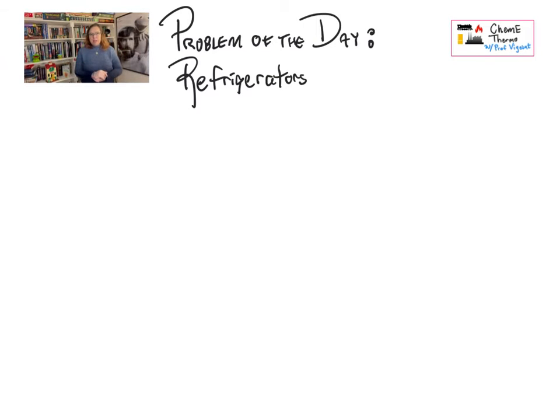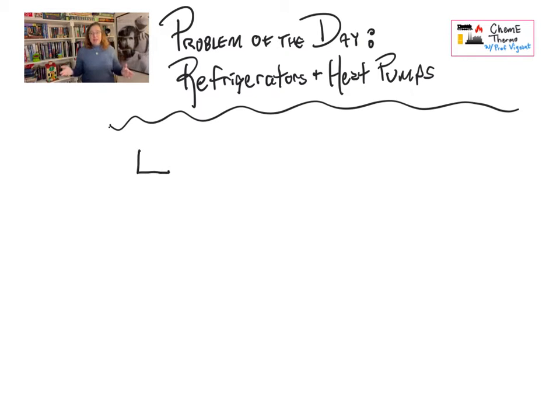The reason we're going to talk about this in addition to Rankine—Rankine is useful and gives you enough context to understand other cycles—is that refrigeration is something that's used so widely you really should understand it, and also it tends to be a little like magic.